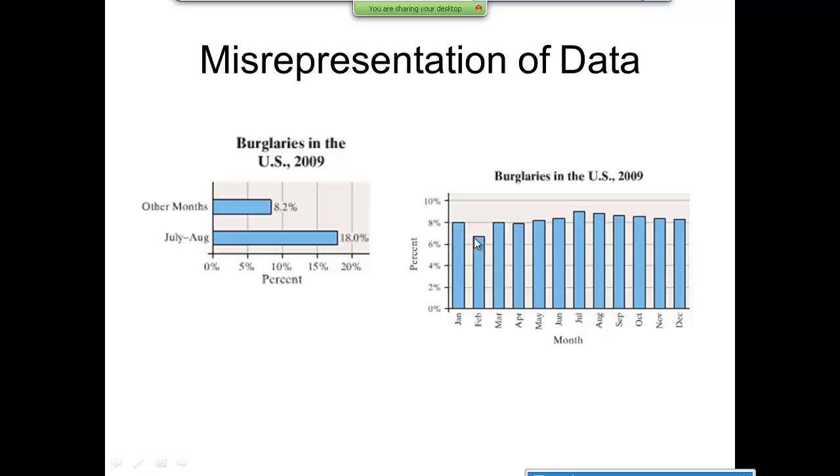A truer picture would show that they're pretty much roughly the same all the way across. July and August are a little bit bigger. A company might try to portray this to get extra business during the summertime, indicating these are real dangerous months and let's put in a home security system for you.